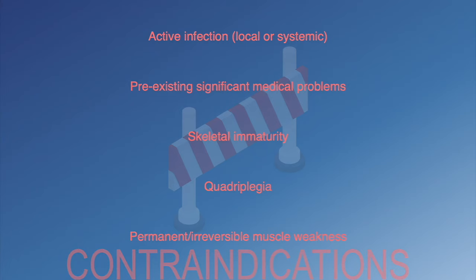Total hip arthroplasty should not be undertaken in a number of clinical settings, including where there is active infection — local or systemic — where there are pre-existing significant medical problems such as recent myocardial infarction, unstable angina, heart failure, or severe anemia. It shouldn't be performed if the patient is skeletally immature, if the patient is quadriplegic, or if the patient has permanent or irreversible muscle weakness in the absence of pain.